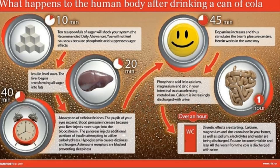Let's look at what happens to the human body after you drink a can of cola. At 10 minutes, the sugar shocks your system beyond the recommended daily allowance; you won't feel nauseous because the phosphoric acid suppresses the sugar effects. At 20 minutes, insulin levels start to soar and the liver begins transforming all sugars into fats. At 40 minutes, caffeine absorption finishes, pupils dilate, and blood pressure increases as the liver injects more sugar into the bloodstream.